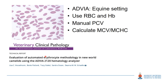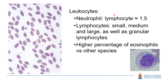A technical report looked at the best way of evaluating new-world camelid blood on the ADVIA 2120 hematology analyzer, and the authors found that the equine setting was best to use. Using the equine setting, you can use the red cell count and hemoglobin concentration from that, run a manual packed cell volume, and then calculate your red cell indices. Camelid settings on other analyzers may not be as well validated. In terms of leukocytes, camelids tend to have a lymphocytic leukogram with a neutrophil-to-lymphocyte ratio of about 1.5, and you may see granular lymphocytes. They also have a higher percentage of eosinophils than other species, so do not over-interpret moderately high eosinophil counts as eosinophilia.